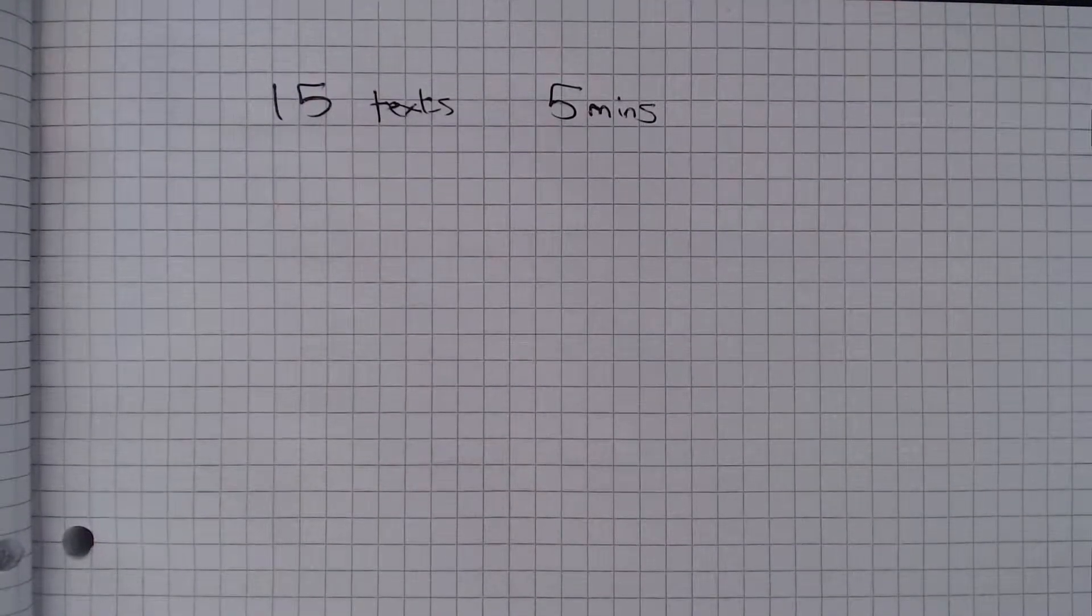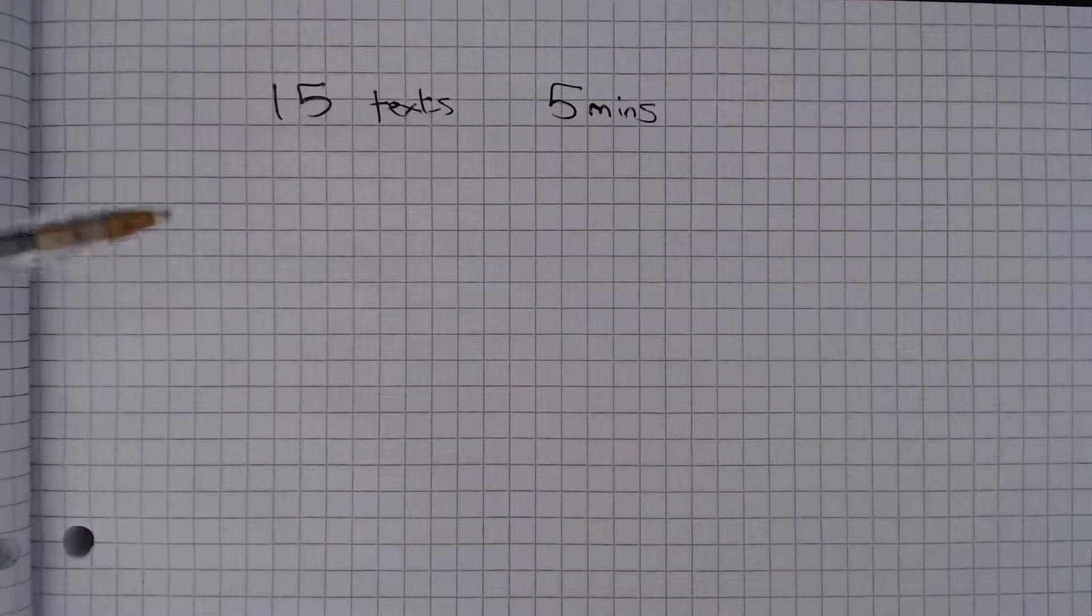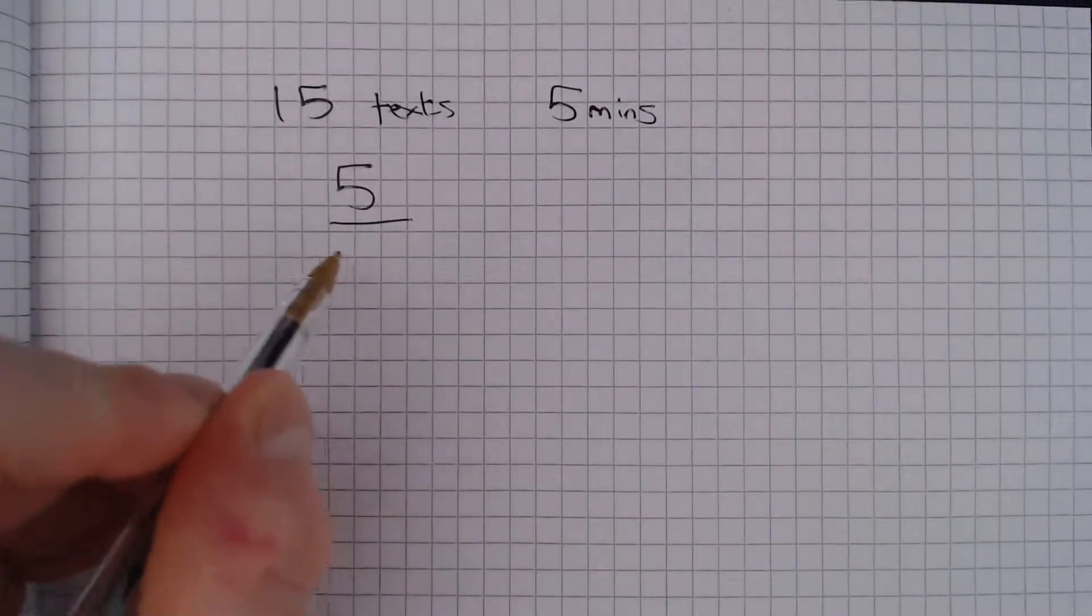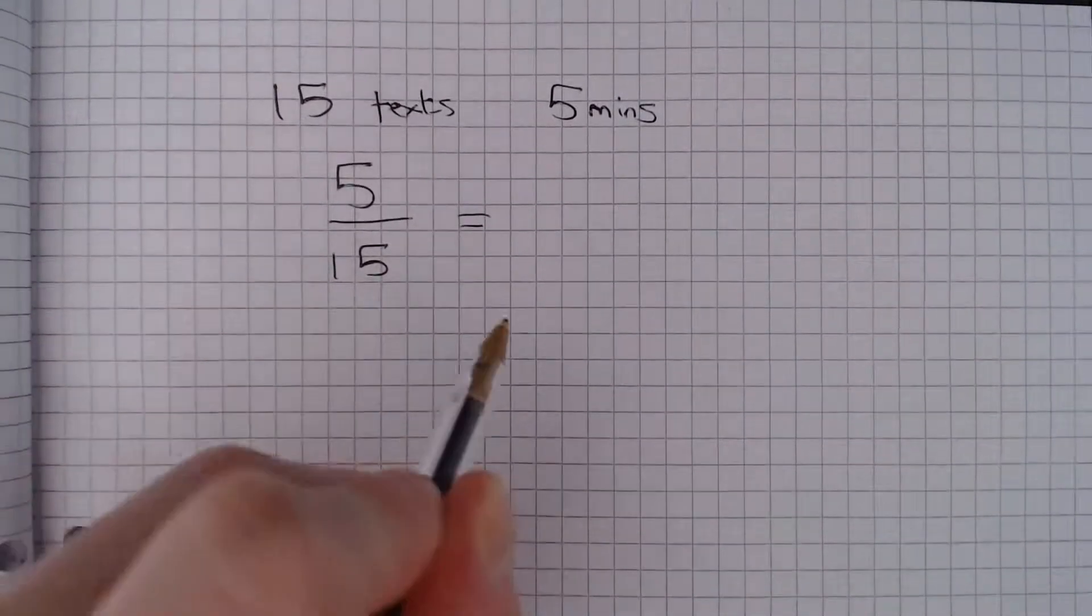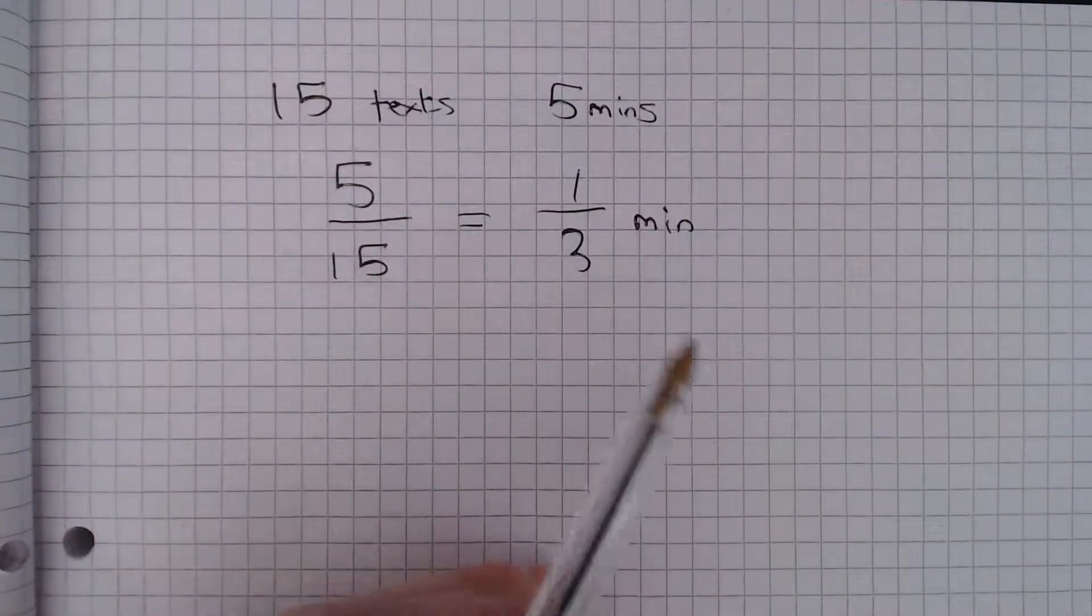There are two ways of doing this. The first way is to say, if she's sent 15 texts in 5 minutes, then she sends a text every 5 divided by 15, which is of course a third of a minute. So she sends a text every third of a minute.